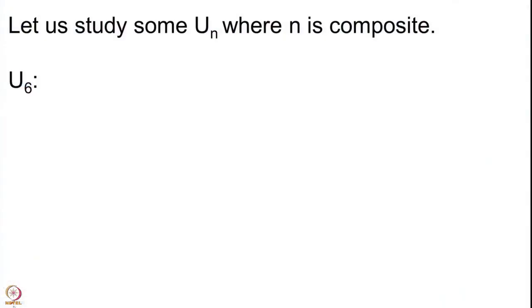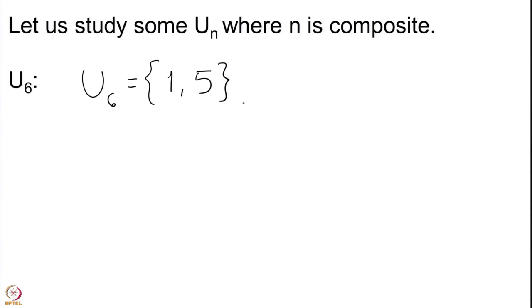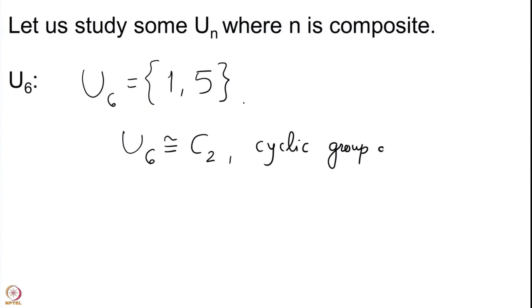We now study U(n) in more detail where n is a composite number. Let us compute these for some small values of n. First of all we look at U(6). Since 6 is the smallest number divisible by two different primes, the elements of U(6) are those co-prime to both 2 and 3. So you get only two elements here. Since every group of order 2 is isomorphic to the cyclic group of order 2, U(6) is isomorphic to C2.